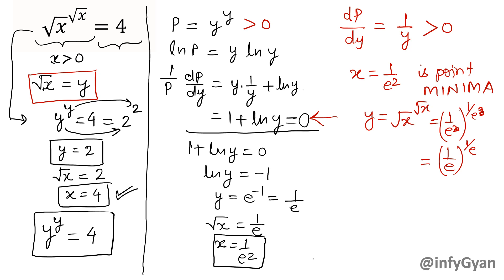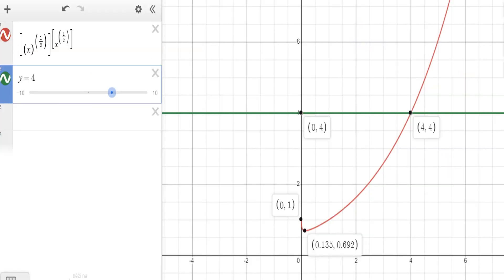So let us take the graph part. See now. This is minima at 1/e and this 0.692 is the value of (1/e)^(1/e).